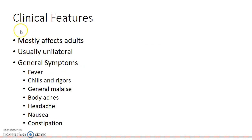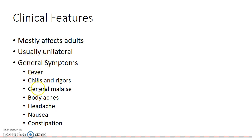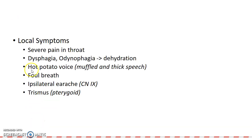Now let us see about the clinical features of this condition. It mostly affects adults and is usually unilateral. The general symptoms are fever, chills and rigors, general malaise, body aches, headache, nausea, and constipation.